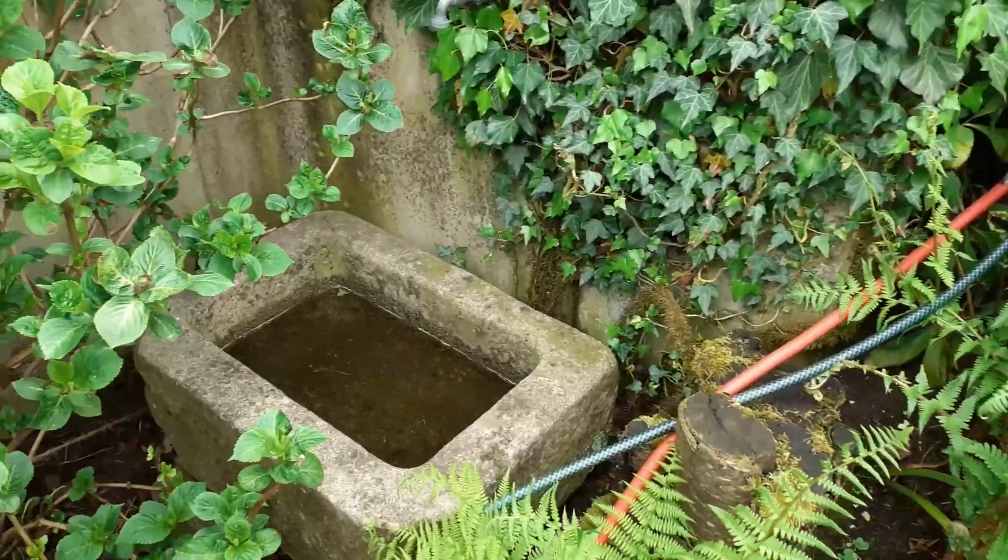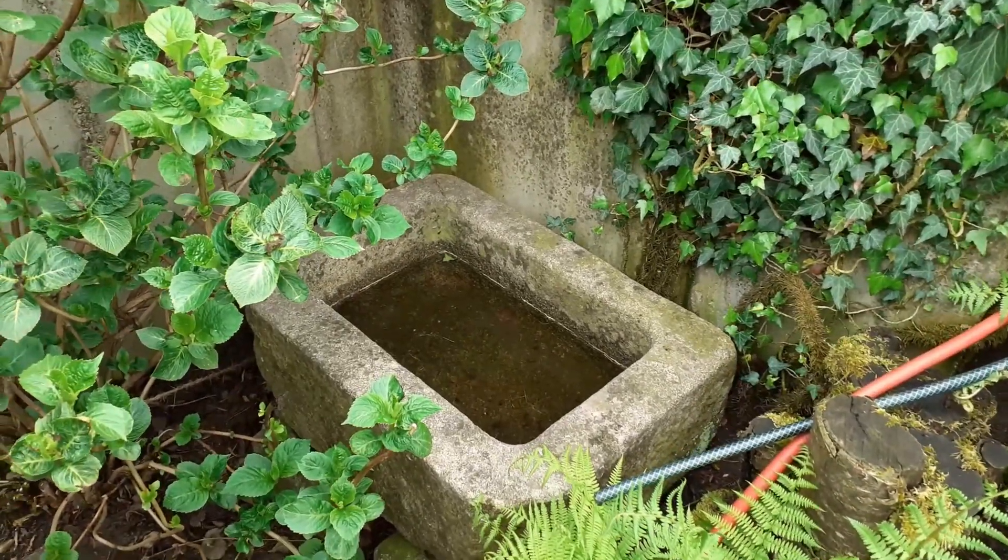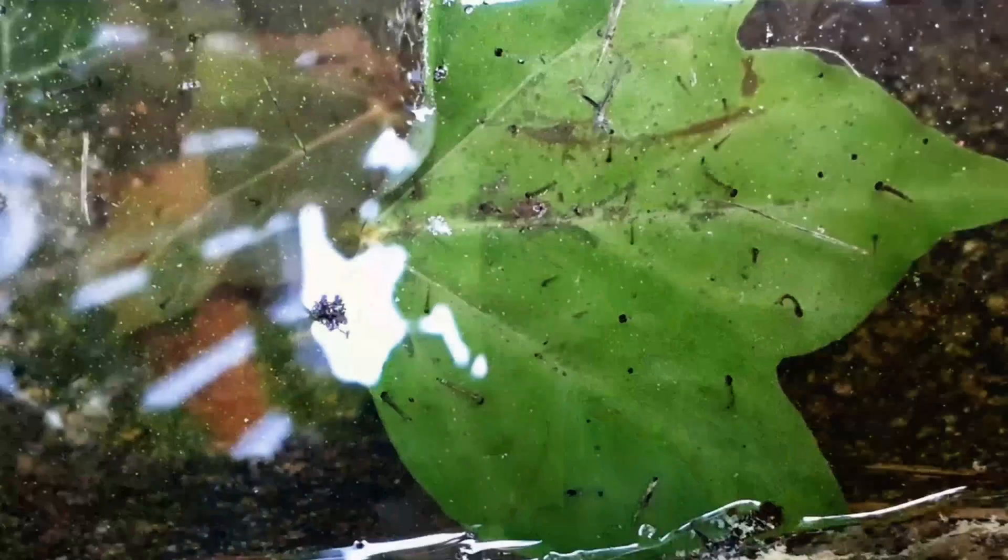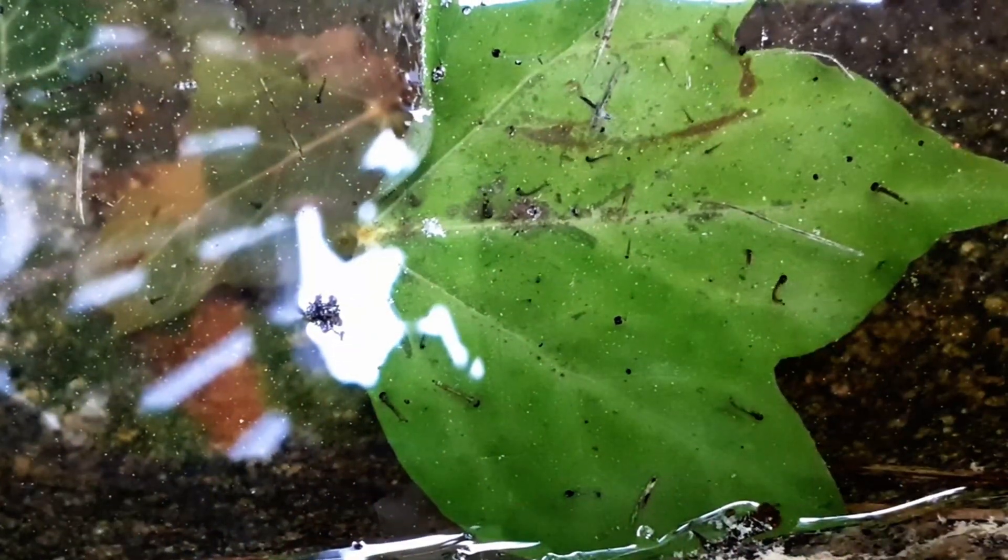I found a bird bath here in the garden and there are some interesting little things swimming in the water, quite visible with the unaided eye. I'm quite sure that these are larvae, possibly of mosquito, and I'd like to catch a few of them and put them under the microscope.